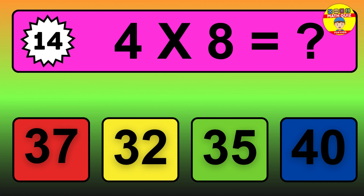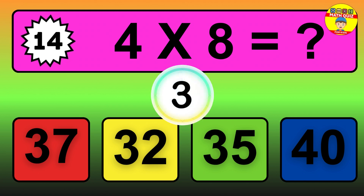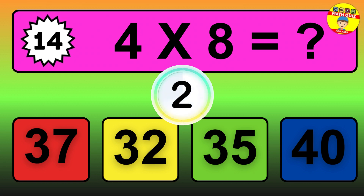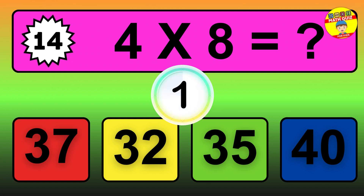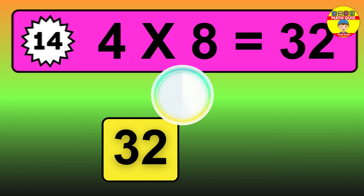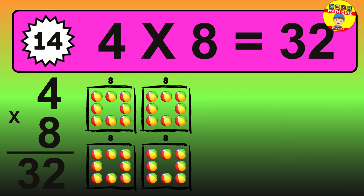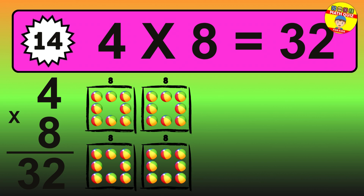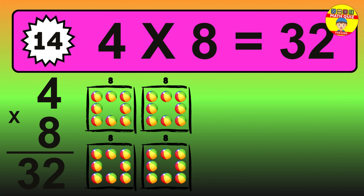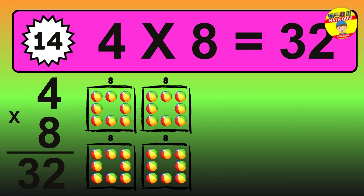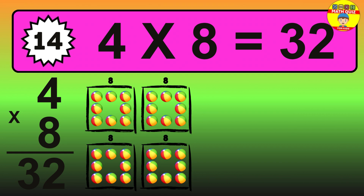Question 14. 4 times 8 equals what? The answer is 4 times 8 is 32. So how many balls do we have? 32 balls.